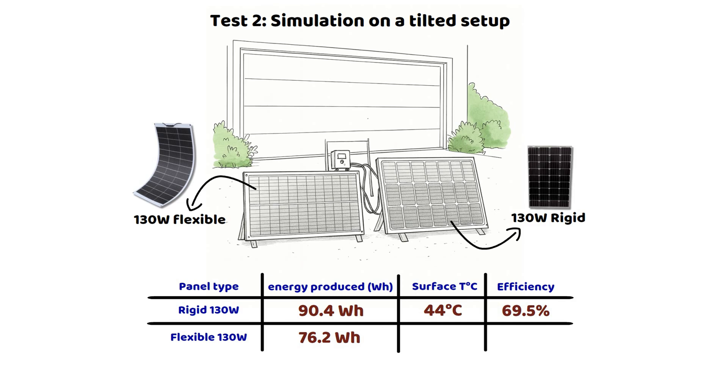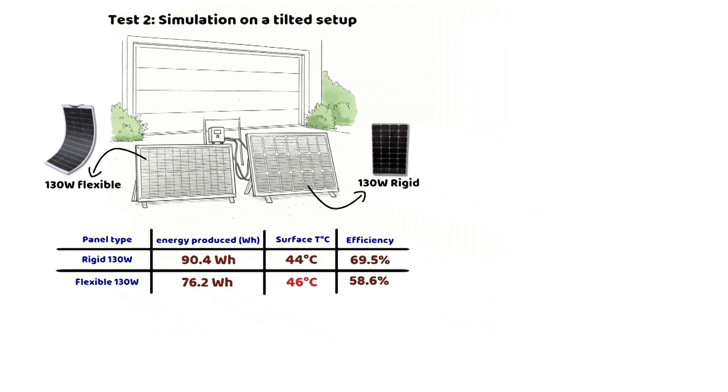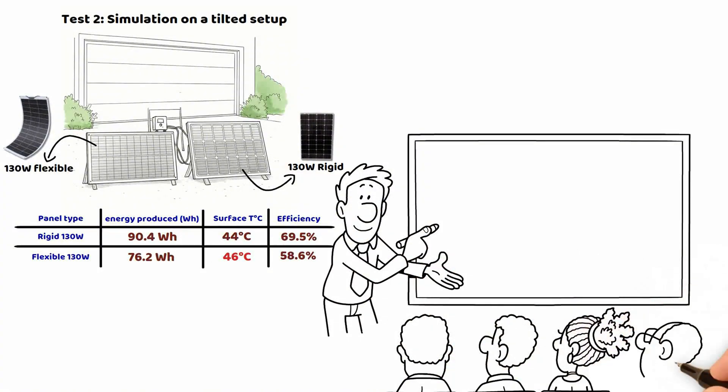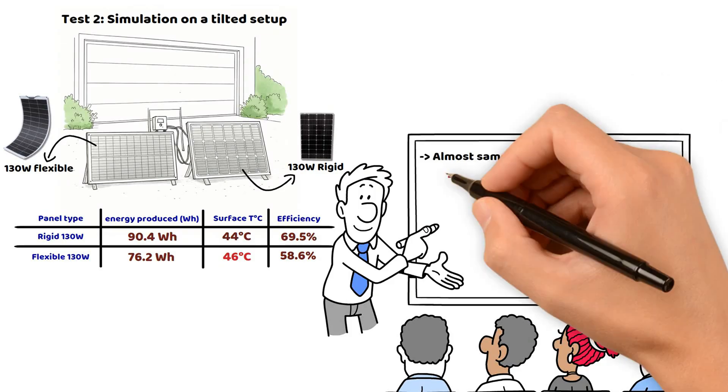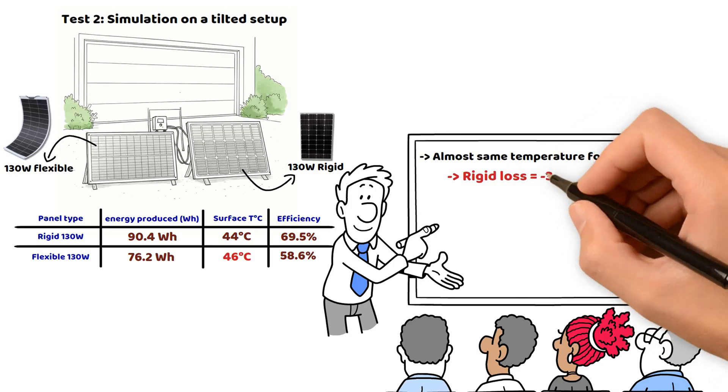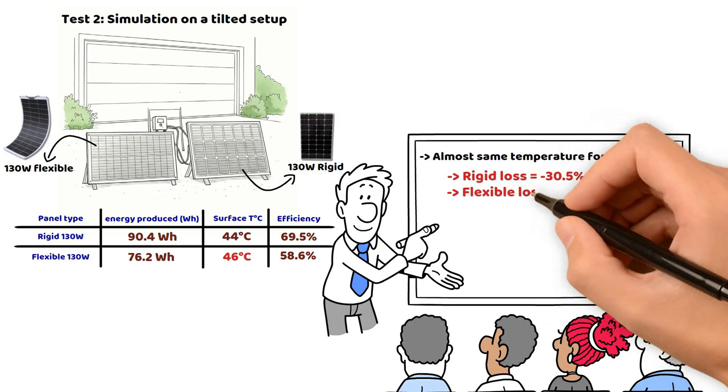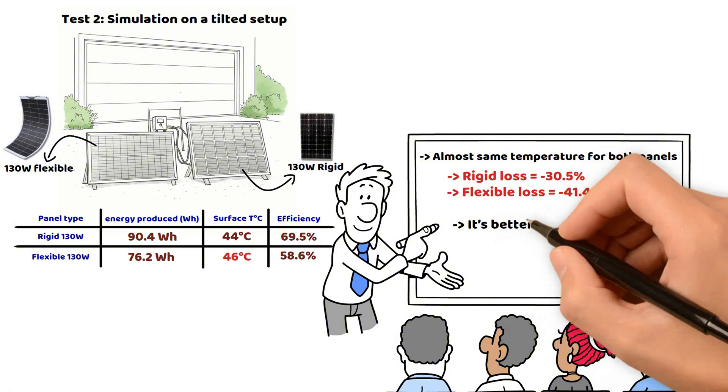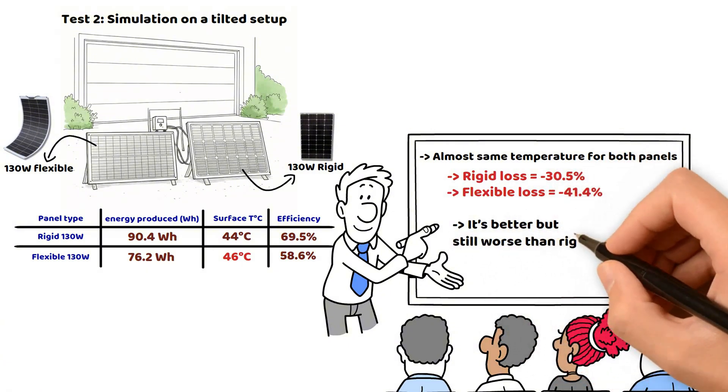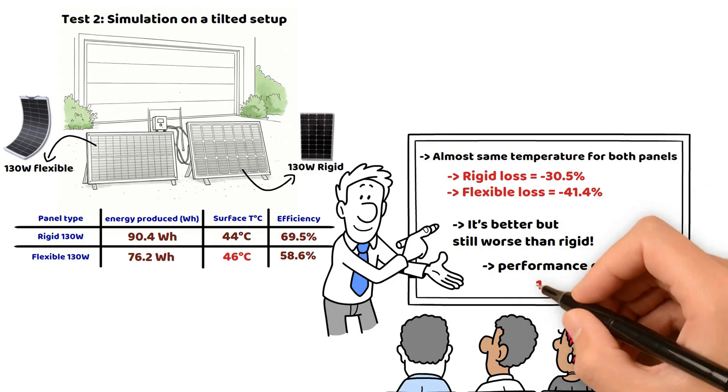In comparison, the flexible panel delivered an average power of 76.2 watt hours, which equals an efficiency of 58.6%. The temperature recorded was 46 degrees. In this second test, we can already see that the temperature almost balanced out between the two panels. The rigid panel takes very good advantage of the tilt and ventilation, with an efficiency of 69.5%, much higher than what was measured when flat at 61%. The flexible panel, even though it is better ventilated here and has a lower temperature, only reaches 58.6% efficiency. So it improves its performance compared to the flat position at 48%, but it still remains less efficient no matter what.